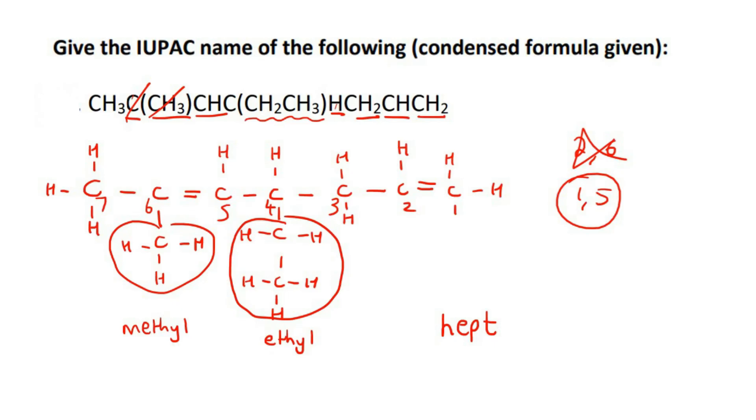Now you have to use the alphabet. So E is before M. So we could say on carbon number 4, there is an ethyl. On carbon number 6, there is a methyl.